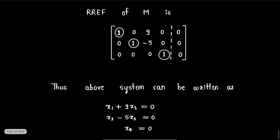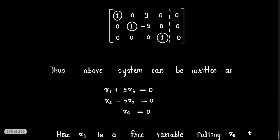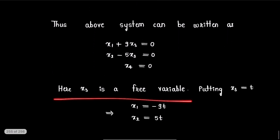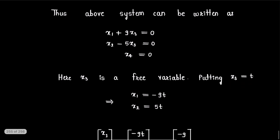Now, from RREF of matrix M, we can observe that pivot elements are present in column 1, column 2, and column 4. Therefore, x3 will be a free variable. So, we will put x3 equals t, where t is some arbitrary real number.